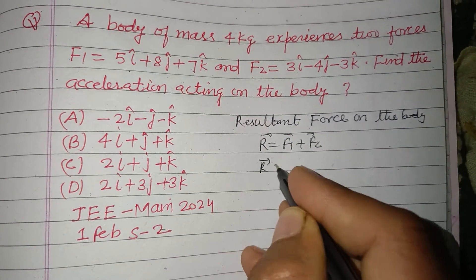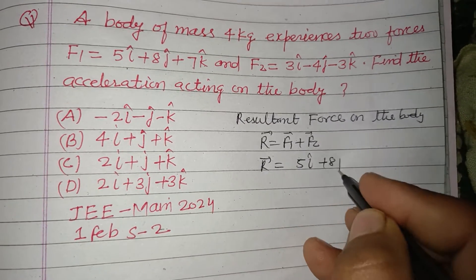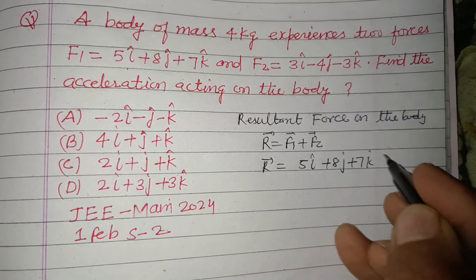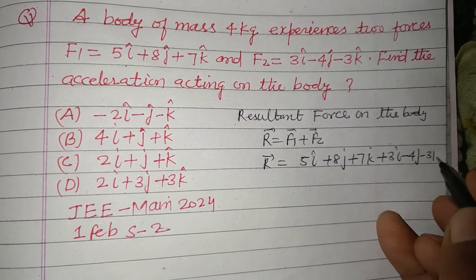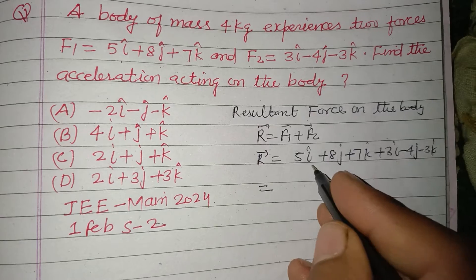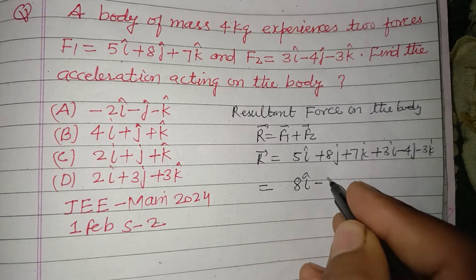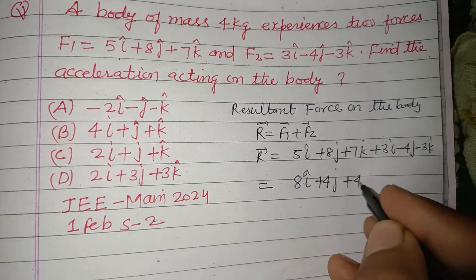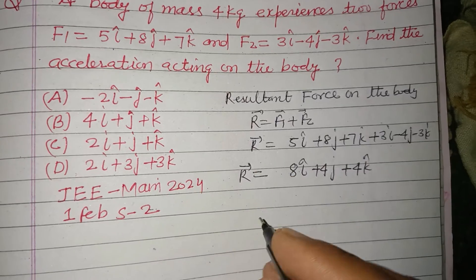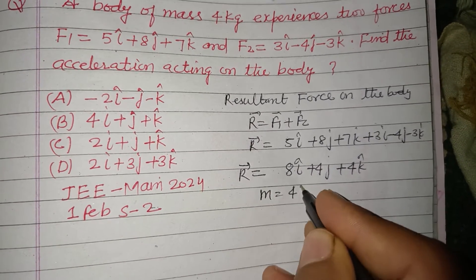This is 5i cap plus 8j cap plus 7k cap plus 3i cap minus 4j cap minus 3k cap. So 5 plus 3 is 8i, 8 minus 4 is 4j cap, and 7 minus 3 is 4k cap. So this is R.